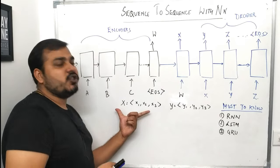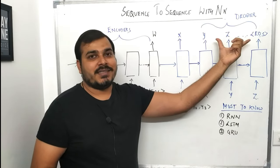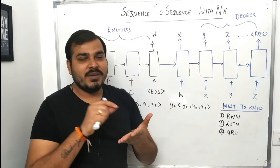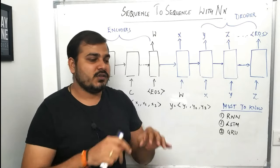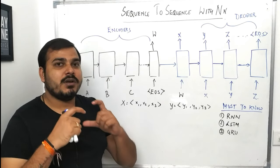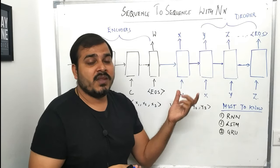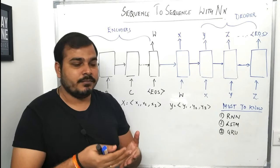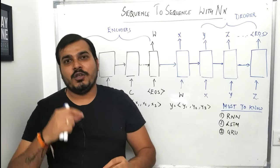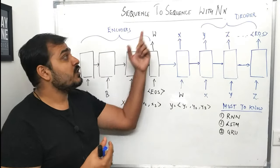Another example: if I give an image, that image can be converted into text — that is basically called image captioning. If you've seen Google image search, when you search for a dog image and write 'dog image,' automatically the dog image is shown — that's a perfect example of sequence to sequence. Similarly, on LinkedIn, when somebody is typing messages to you and you get some automated reply options in the chat box — that can also be an example of sequence to sequence in neural networks.